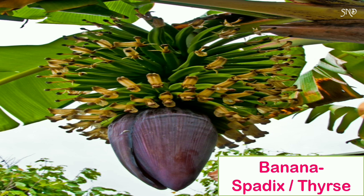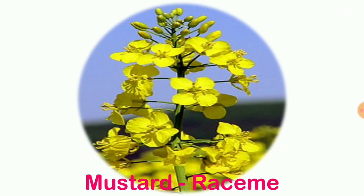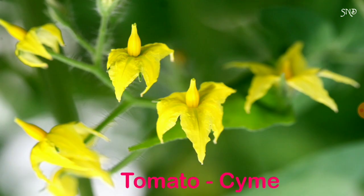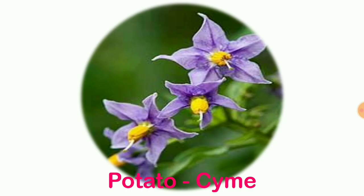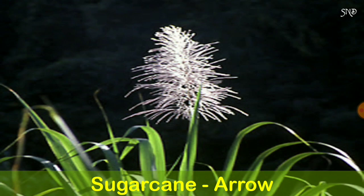Banana's inflorescence is called spadix or thyrsus. In mustard, it is raceme. In tomato and cyme, carrot has umbel. Potato inflorescence is cyme. Sugarcane's inflorescence is called arrow.